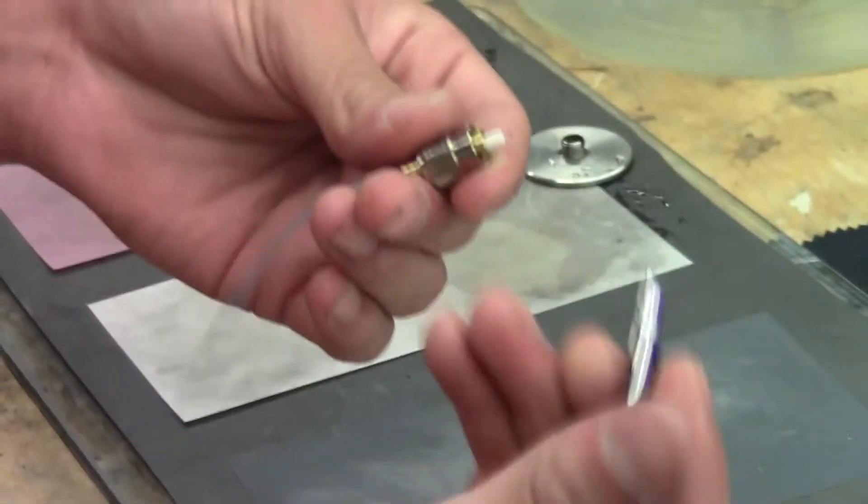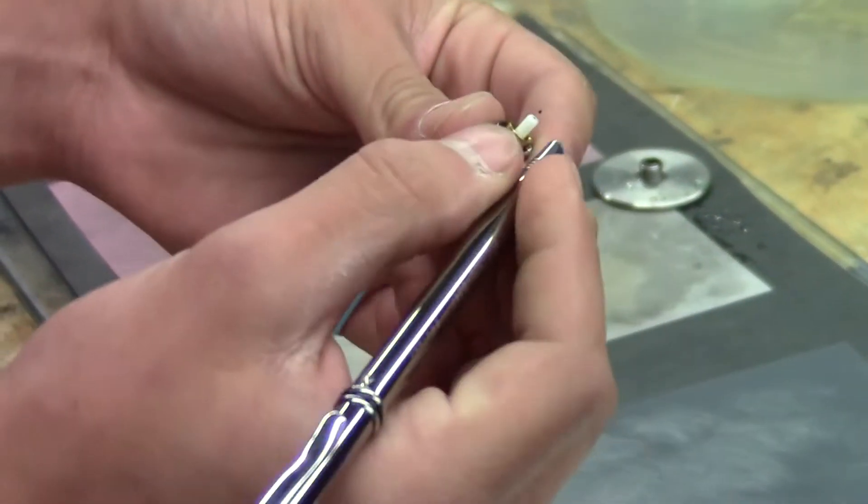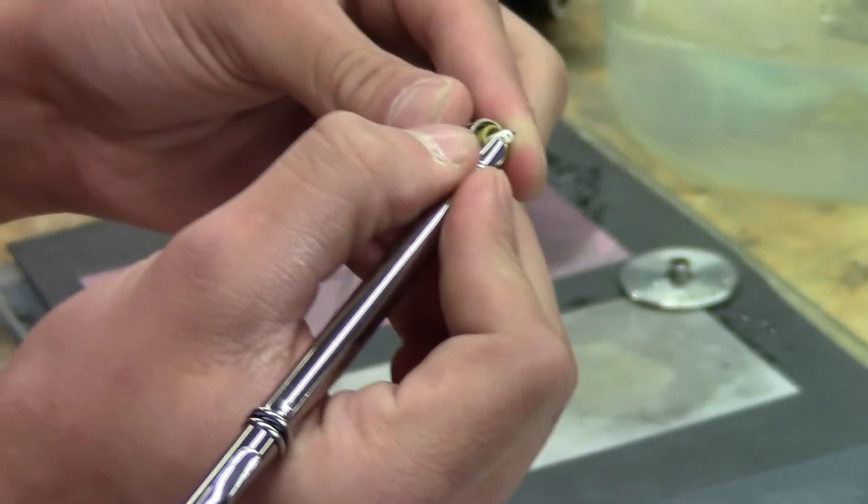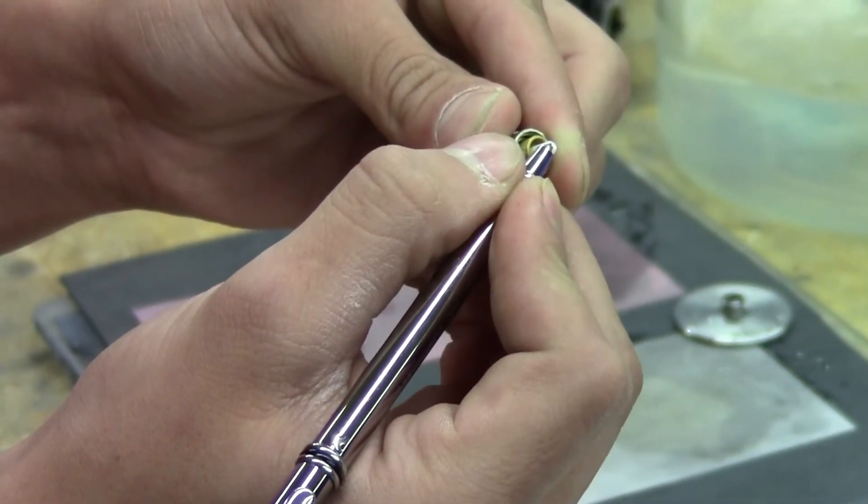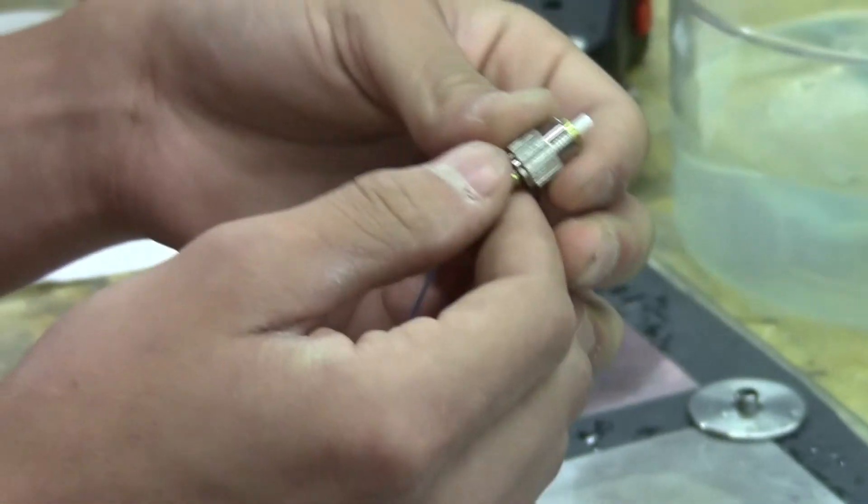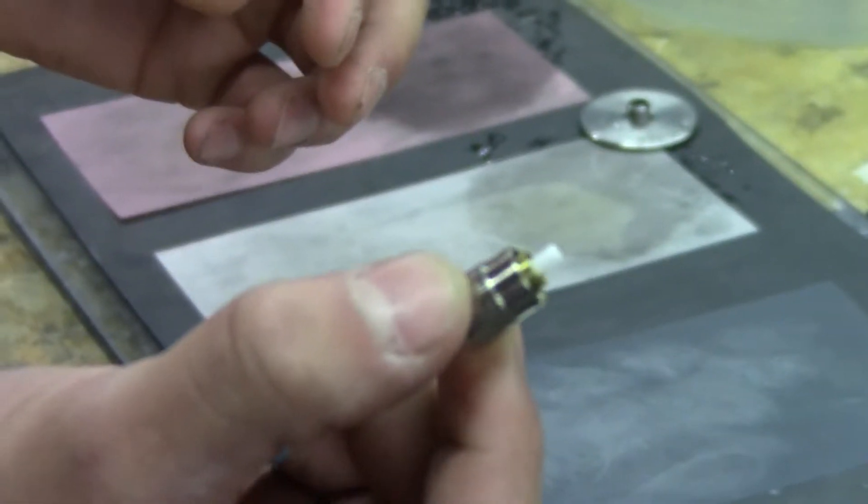The first thing we're going to do is scribe away most of the protruding tip with a diamond scribe. You want to leave about a millimeter, half a millimeter, so just have a little bit left.